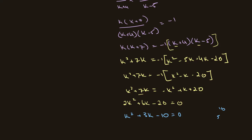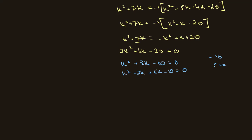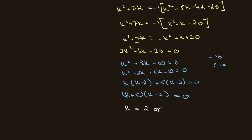We factorize k squared plus 3k minus 10. From minus 10 we get plus 5 and minus 2, giving k squared minus 2k plus 5k minus 10 equals 0, so k(k minus 2) plus 5(k minus 2) equals 0, giving (k plus 5)(k minus 2) equals 0. Therefore k equals 2 or k equals negative 5.